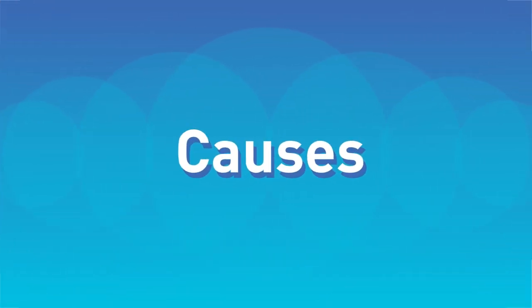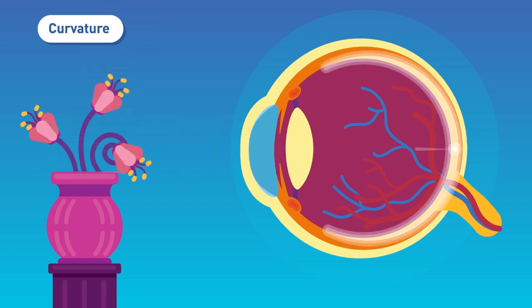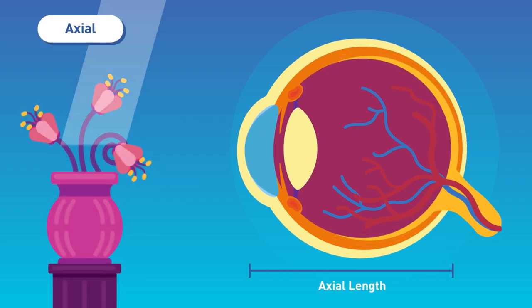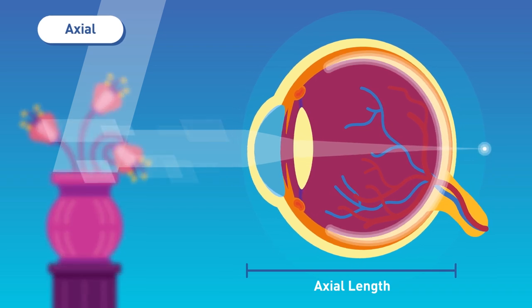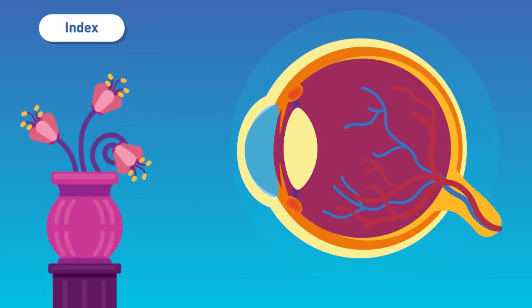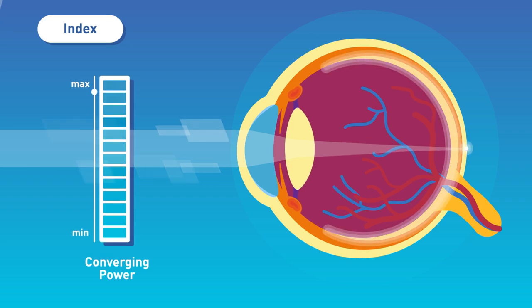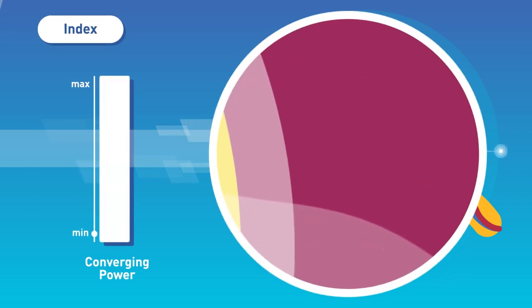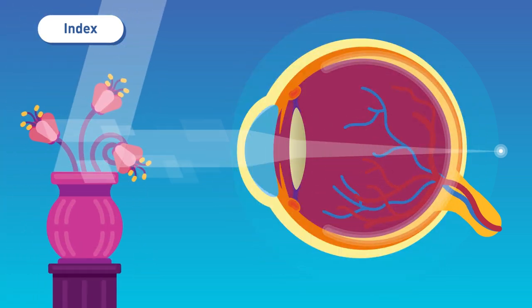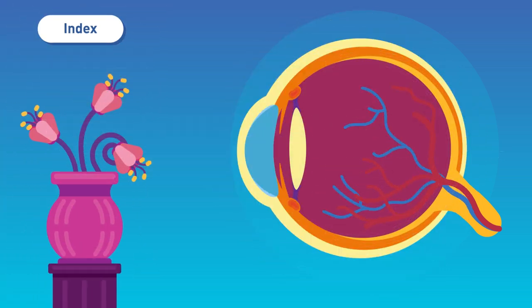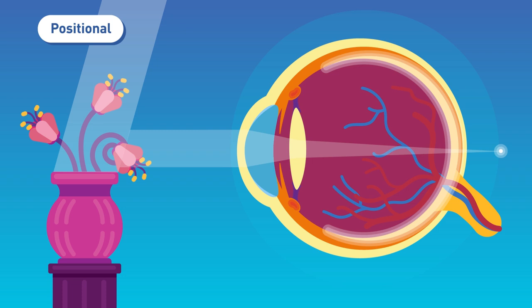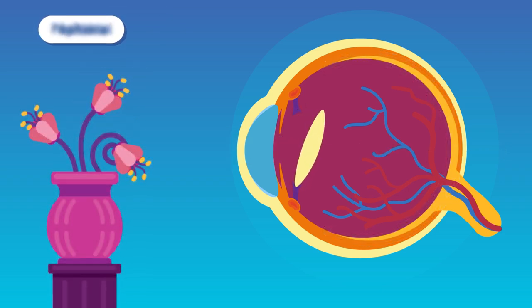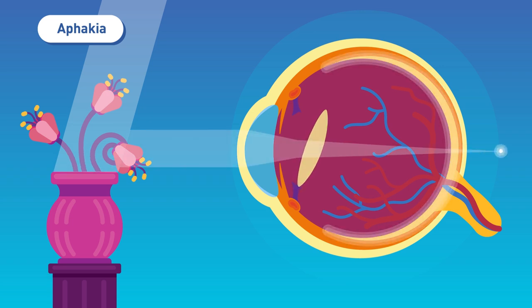Causes: 1. Curvature - curvature of cornea or lens is flatter than normal. 2. Axial - short axial length of eye. 3. Index - decrease in refractive index, light bending, focusing power of the lens, for example in cortical cataract. 4. Positional - posterior displacement of lens, for example after trauma. 5. Aphakia - absence of lens in eye. Therefore, eye cannot focus light rays on retina.